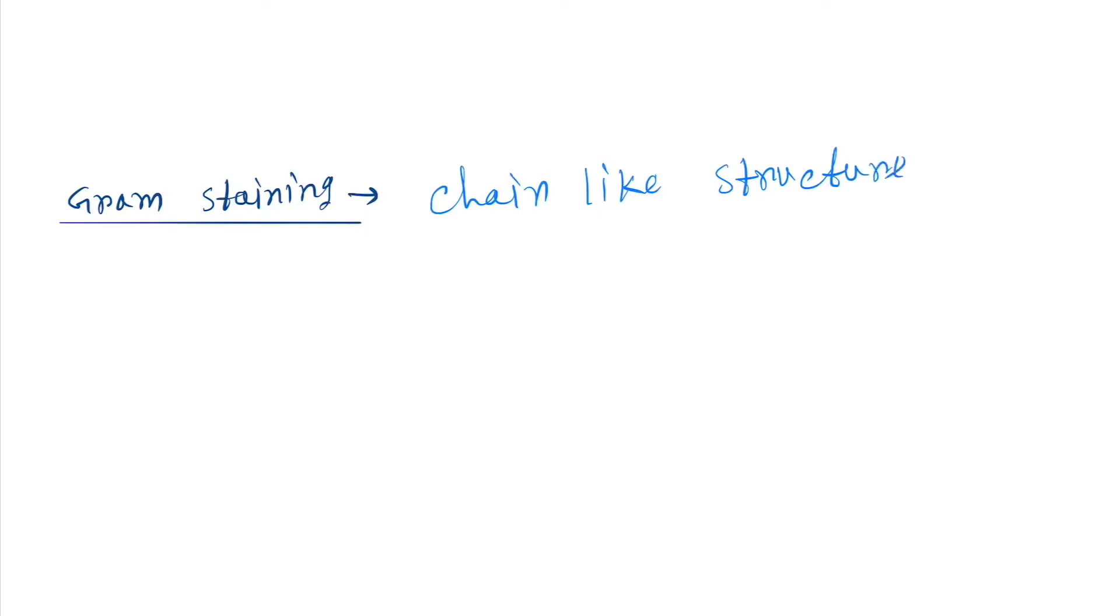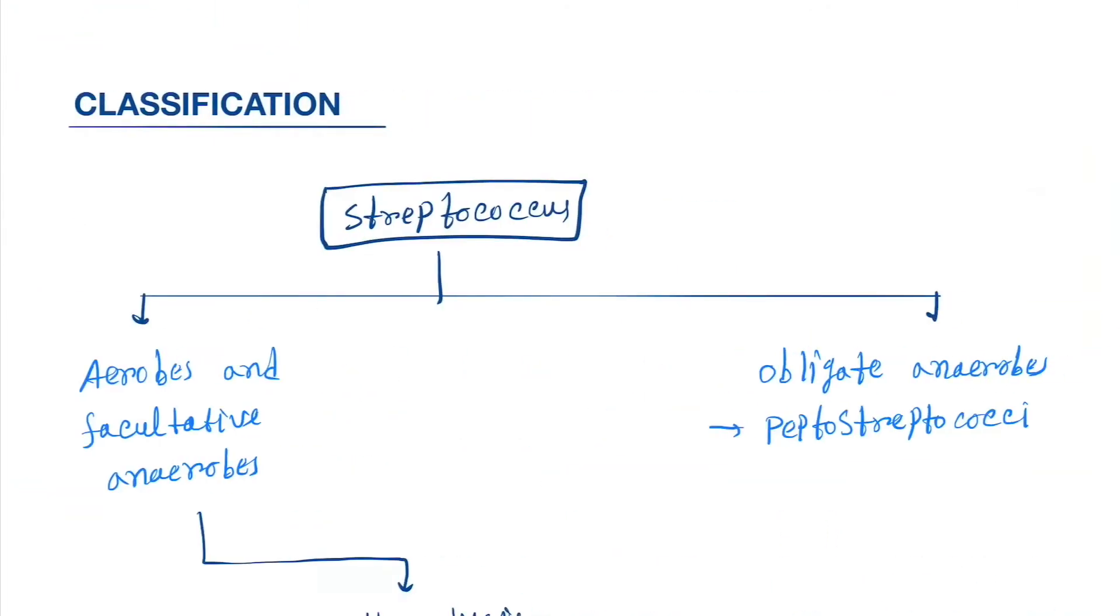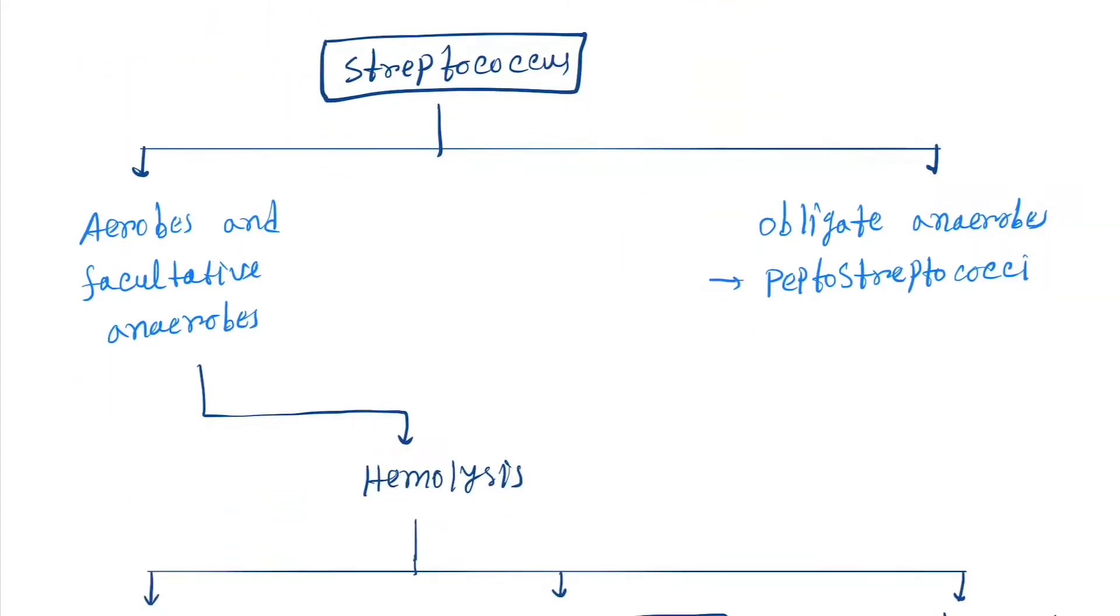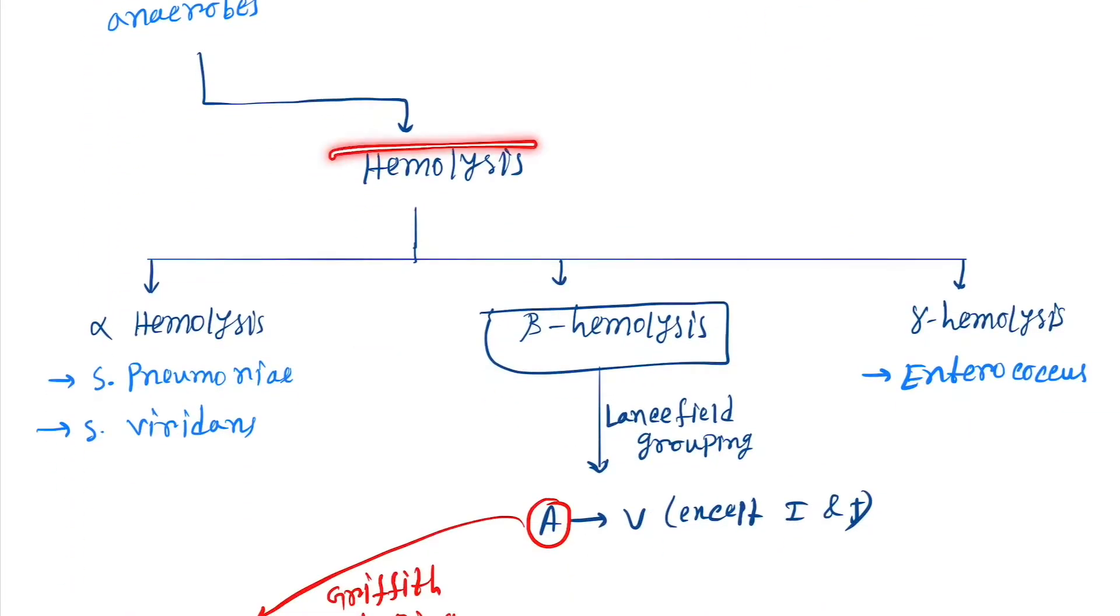So that is the answer will be chain-like structure, violet in color. Now come to the classification, so this is the very important thing for Streptococcus. They are classified into aerobes, facultative anaerobes, and obligate anaerobes. Obligate anaerobes are Peptostreptococci and aerobe facultative anaerobes.